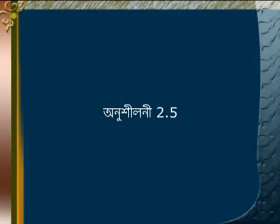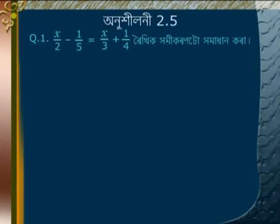Problem 1: Solve x/2 minus 1/5 is equal to x/3 plus 1/4.